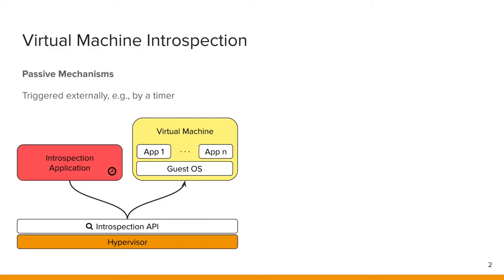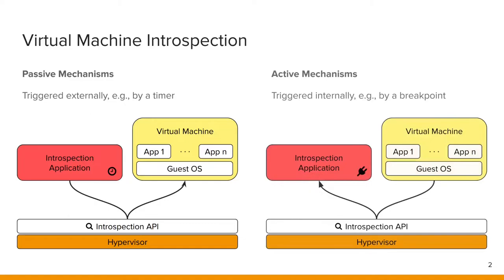The introspection application analyzes the main memory of the virtual machine and tries to infer information. On the other hand, we have active mechanisms which are triggered internally, for example by a breakpoint in the monitored virtual machine. These mechanisms operate by intercepting certain events of interest, interfering with the control flow. This enables monitoring and tracing of software in the VM, for example system call invocations.